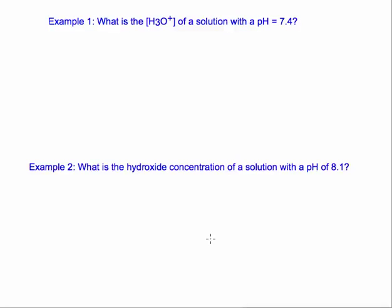So these problems ask you to go the other way, saying what is the hydronium ion concentration of the solution with a pH of 7.4? And hopefully we remember that hydronium ion concentration is equal to 10 to the negative pH. So it's equal to 10 to the negative 7.4. Now you can't turn it in like that, you have to actually do the math.